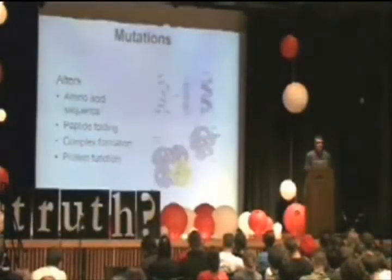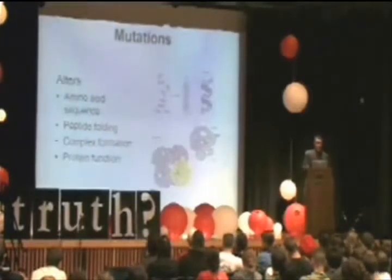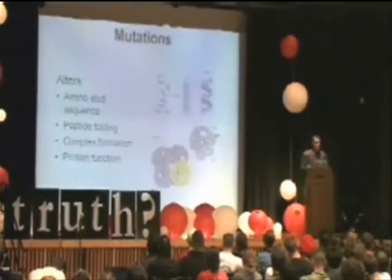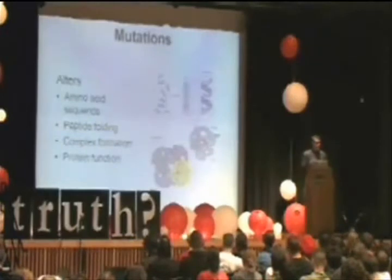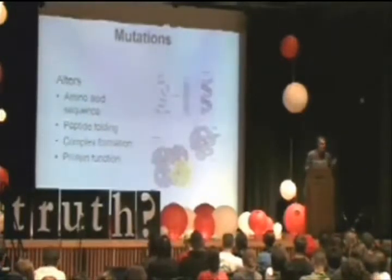A substitution mutation could be considered analogous to a misspelling when you're dealing with a human language. A mutation essentially changes the DNA sequence that comprises a gene. So if you have an A at a particular position, that A gets changed and replaced by a G. Now you have a mutation — a change in that sequence.